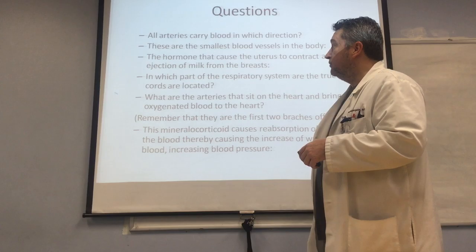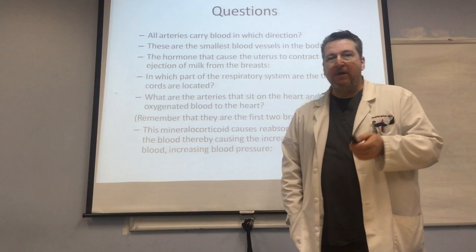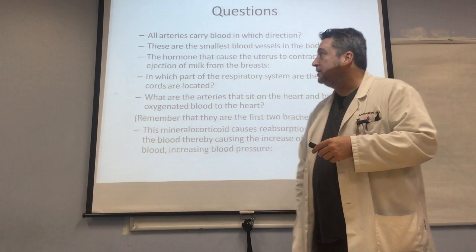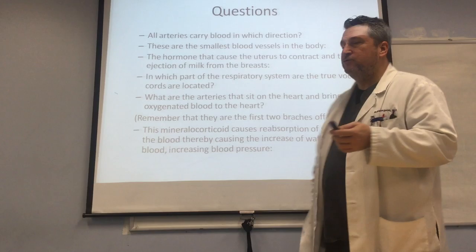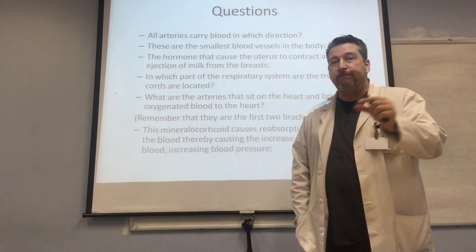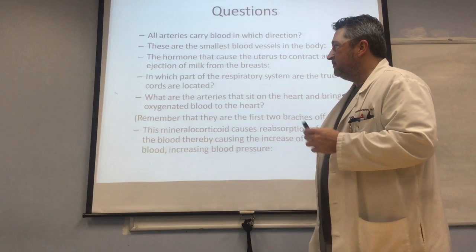The hormone that causes the uterus to contract and the ejection of milk from the breast — this is the hormone made in the hypothalamus but stored and released in the posterior pituitary gland, and this is oxytocin. We see the exogenous form used in labor and delivery called pitocin. In which part of the respiratory system are the two vocal cords located? That's going to be in the larynx — that's where we find the folds of vocal cords, not in the trachea or bronchi. It's above that, in the larynx.